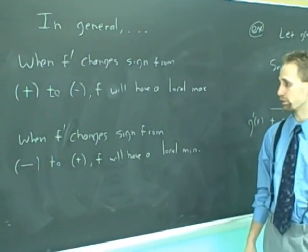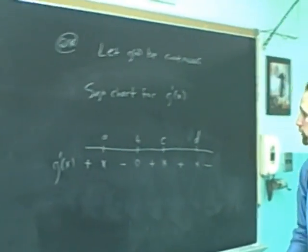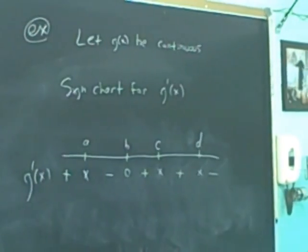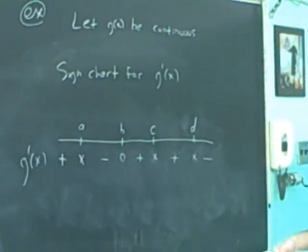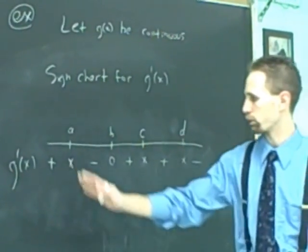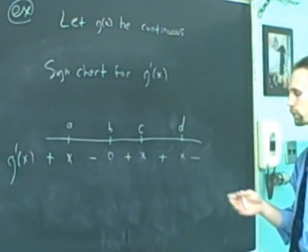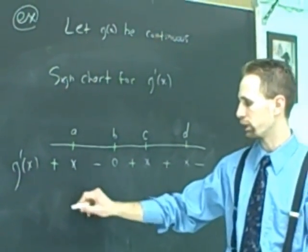As an example of this, I have a random sign chart drawn up here. Let g be an unspecified continuous function, and here's a sign chart for g prime. If you made a sign chart for some continuous function and wound up being this way, you would look for sign changes to identify the relative maxes and mins. So, for example, we'd say that we have a max here.